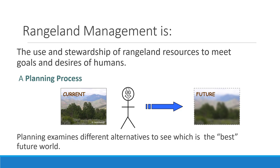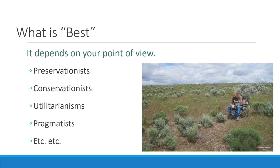In terms of applying that concept of planning to rangeland management, what we do is look at different alternatives for the future. If we do something, it will have various outcomes, and we have to decide which is the best future — what do we want to do today that will change the land to meet the demands of humans into the future? What is best depends on your point of view.